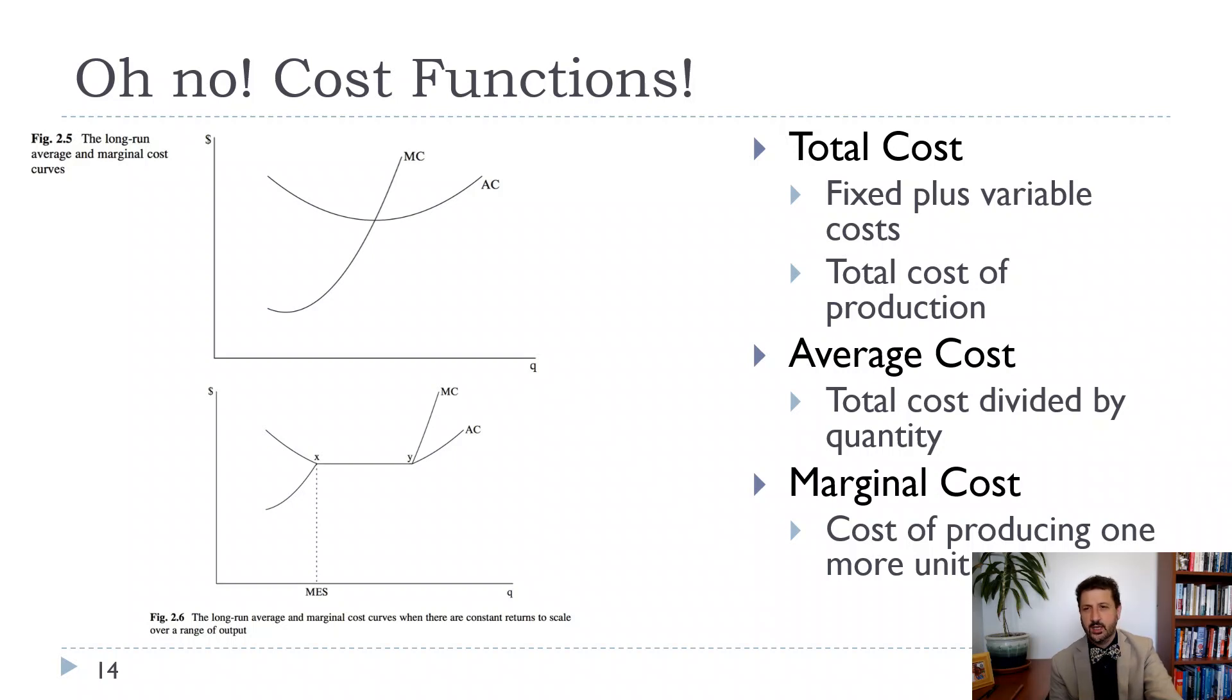One thing to note is that marginal cost always intersects the average cost at the minimum. I always explain it in my classes. If your last exam grade is below your average, that brings your average down. So that's what's going on here. And then if your marginal exam grade, your last exam grade is higher than your average, that's going to bring your average up. And so where they cross is always going to be at the average cost minimum.